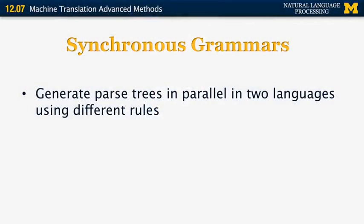And one more thing to mention in statistical machine translation is the idea of synchronous grammars. So synchronous grammars were introduced in machine translation by Kai Wu in the nineties. So the idea is to generate parse trees in parallel in two languages using different rules. So you can start, for example, from an S in both languages. And then you're going to apply different rules that take into account, for example, whether the languages are subject, verb, object,